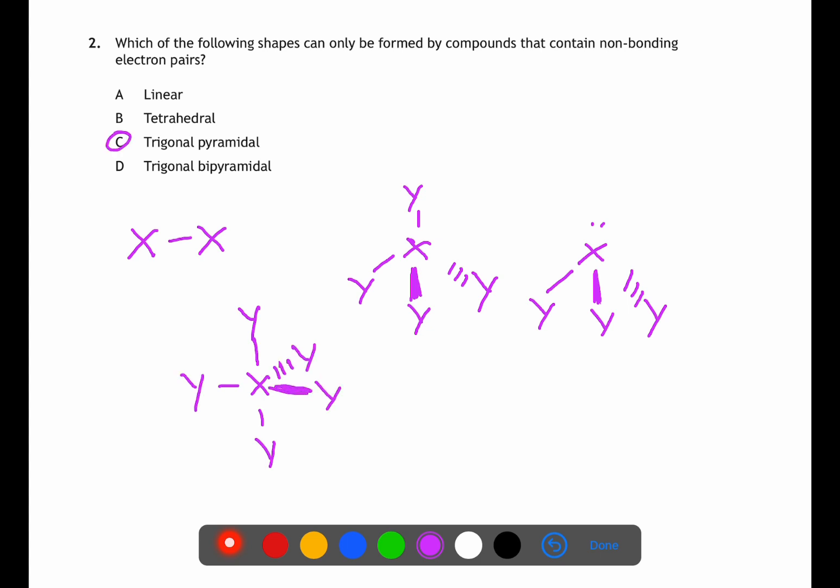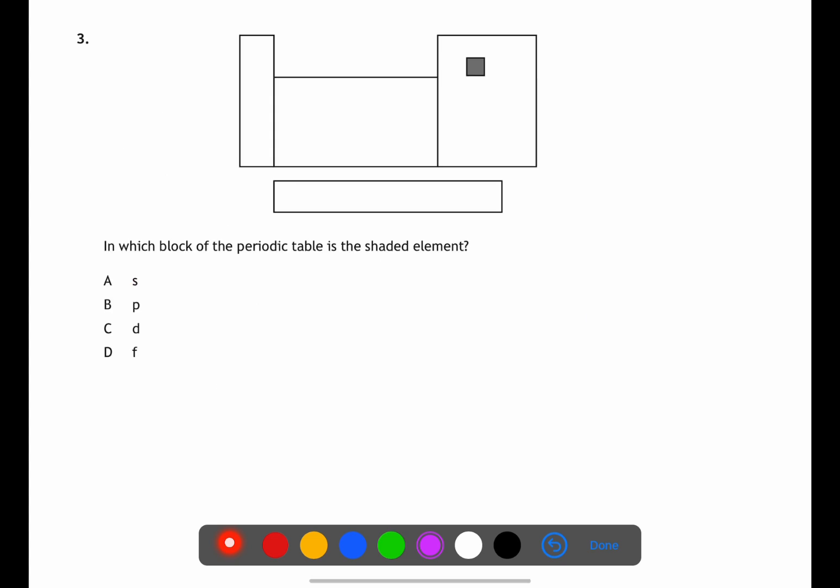Question three is looking at the structure of the periodic table. There are four blocks on the periodic table and these are determined by the last orbital to be filled with an electron. The block on the left is the s block, the block in the middle is the d block, the block on the right hand side is the p block, and the block at the bottom is the f block. The highlighted element is in the p block.